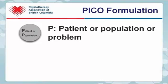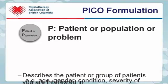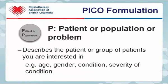P represents the patient or population or problem. It describes the patient or group of patients you are interested in — for example, their age, gender, condition, or severity of condition.